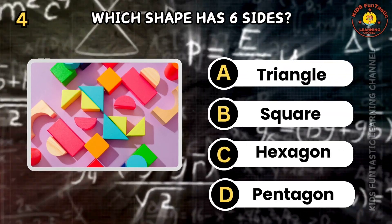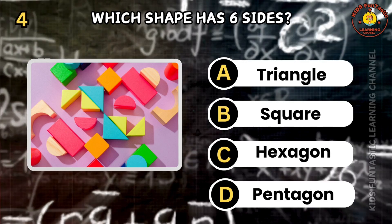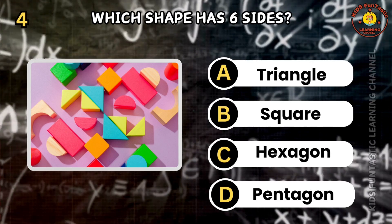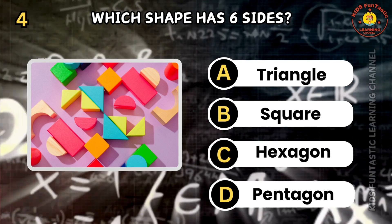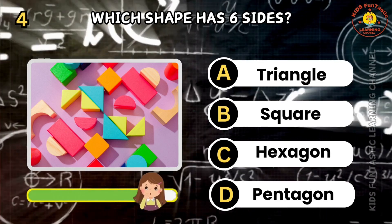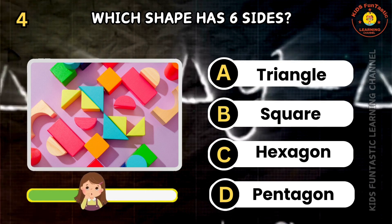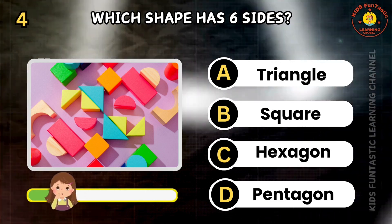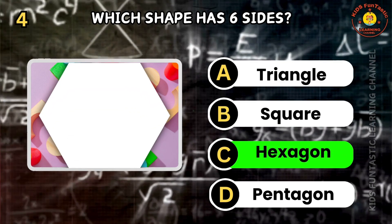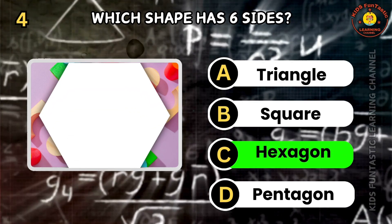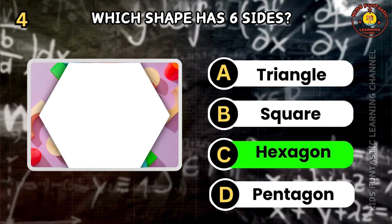Question 4. Which shape has six sides? A: triangle, B: square, C: hexagon, D: pentagon. Brilliant work! The correct answer is C. A hexagon has six sides.